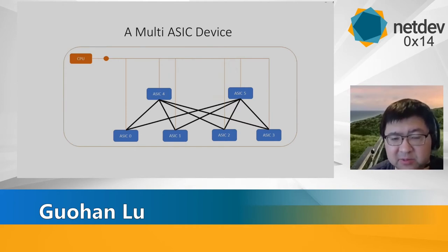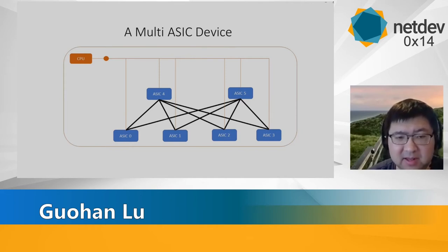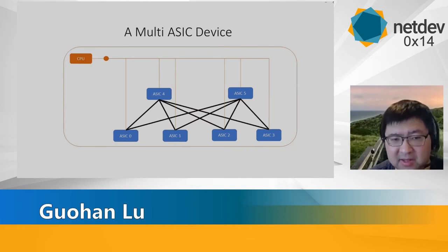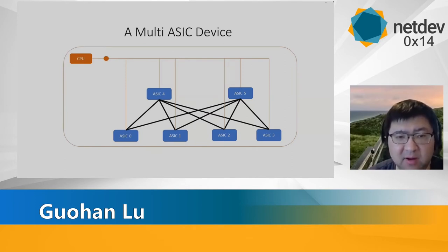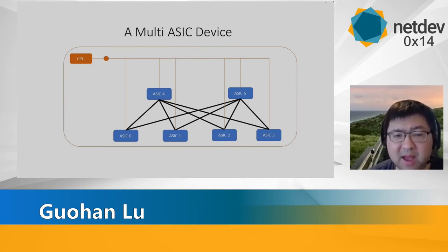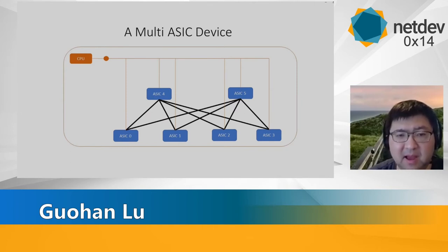ASICs 0 through 3 are front-end ASICs with ports connected to the front panel ports. However, those front-end ASICs are connected by two back-end ASICs, which provide connectivity among all the front-end ASICs. When a packet reaches front-end ASIC 0 and wants to go to front-end ASIC 1, it is switched first to one of the back-end ASICs and then to front-end ASIC 1. The challenge is: in Linux, how do we manage those six ASICs in a single box, exchange routing information among them, and make them appear as one ASIC to the outside world?